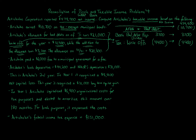Next, Artichoke paid a $6,000 fine to a municipal government. For financial accounting purposes, you are allowed to take that as a deduction. But for tax purposes, the tax law says you cannot deduct fines. So we need to add that back — add back that deduction to get our taxable income. That's going to be a positive $6,000.